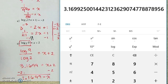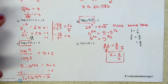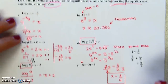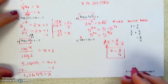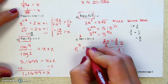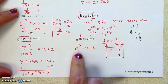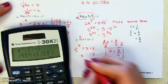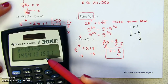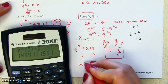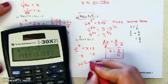One more — 30 seconds. If you see LN, the base is E. So e^5 = x + 3. Find e^5 in the calculator, then subtract 3. e^5 minus 3 is approximately 145, and that's what x equals. Good job!